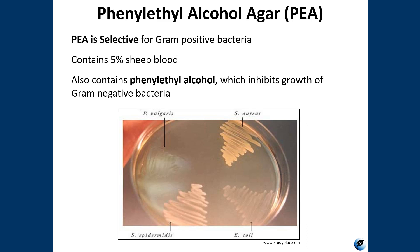PEA is a selective media that encourages the growth of gram-positive organisms and inhibits the growth of most gram-negative organisms. It is not a differential medium because it does not distinguish between different organisms — it merely encourages or discourages growth. Phenyl ethyl alcohol is the selective agent that inhibits gram-negative organisms by breaking down their membrane permeability barrier and inhibiting their DNA.